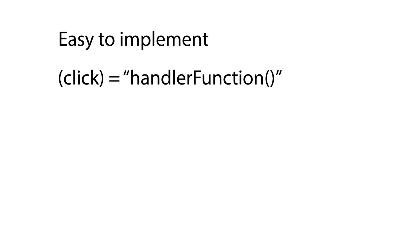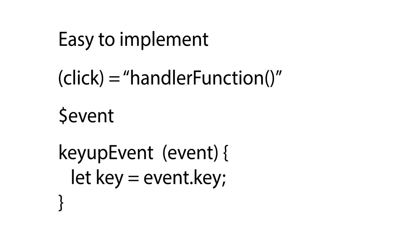Let's take a moment to recap what we have learned. We learned that we can easily implement user interactions in our Angular web applications. We learned how to bind an event to a DOM element by using parentheses and providing the type of event we wanted to bind to, and then handle that event by providing a handler function. We learned that when an event gets triggered, it will return an event object back to us, so we can use that to get information about the event. We also learned that we can get the key for key events by accessing the key property on the event object.